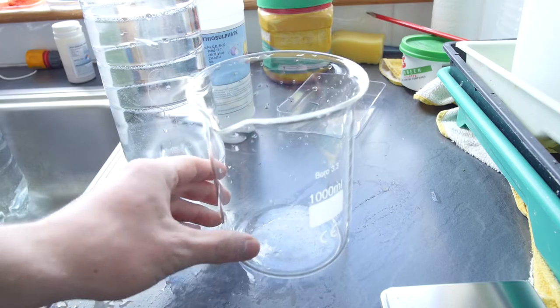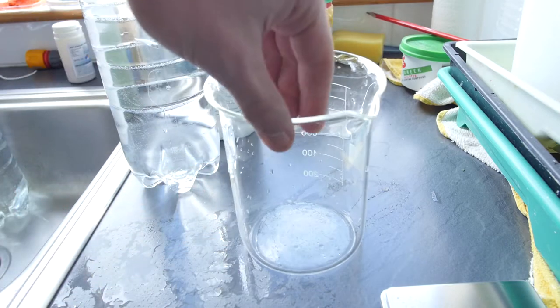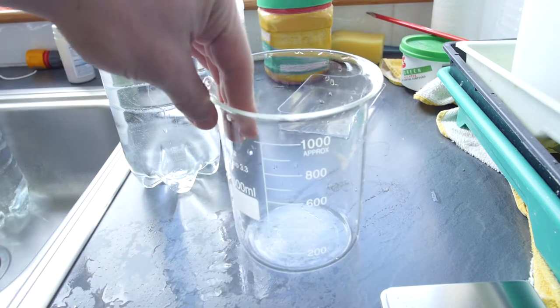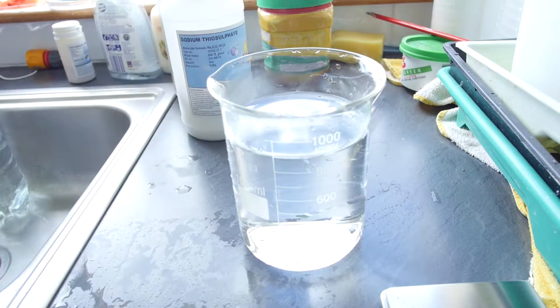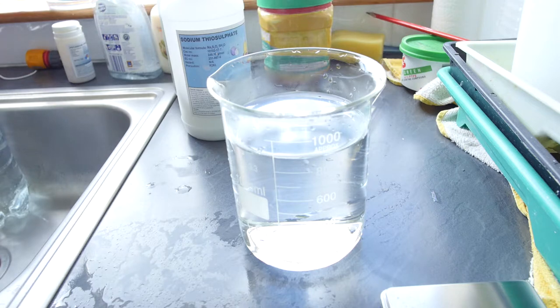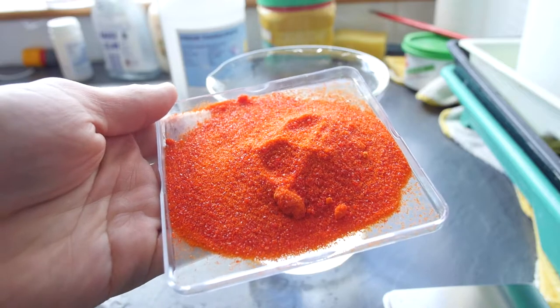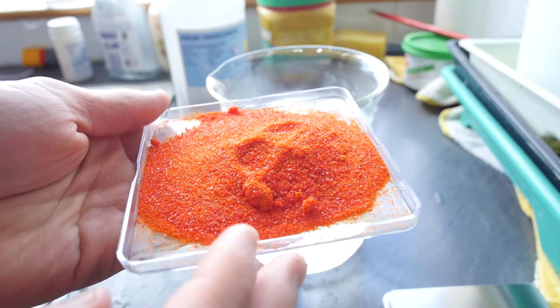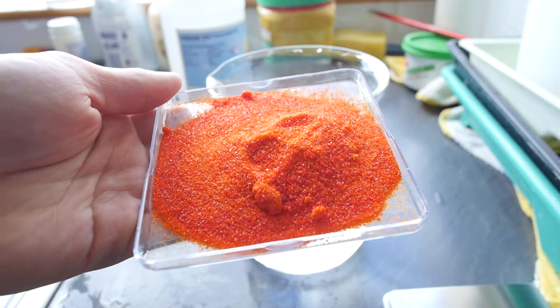To make the bleach, add 900 milliliters of hot water to the beaker, then 40 grams of potassium ferricyanide. Potassium ferricyanide is a red crystal-like substance like this.